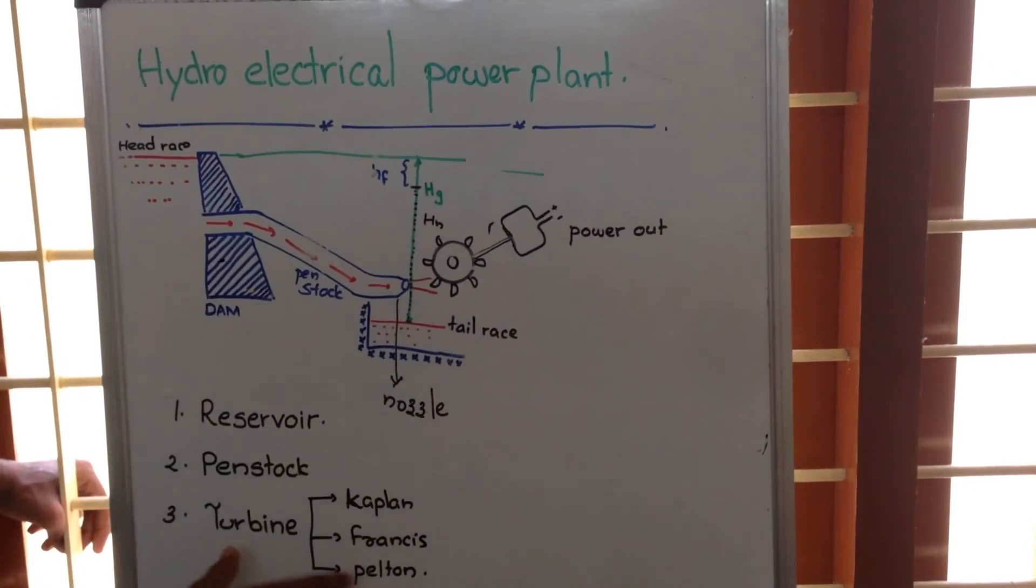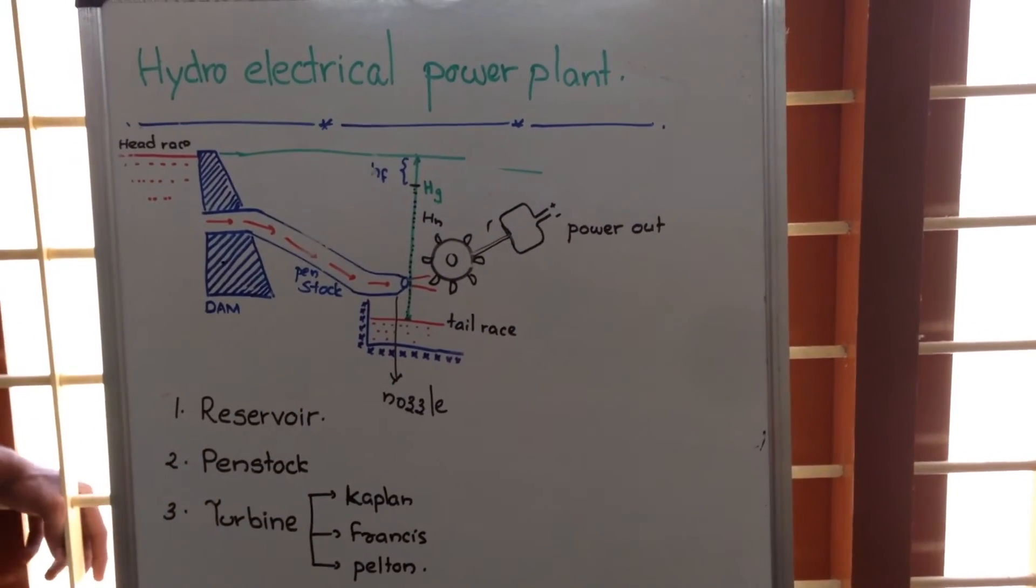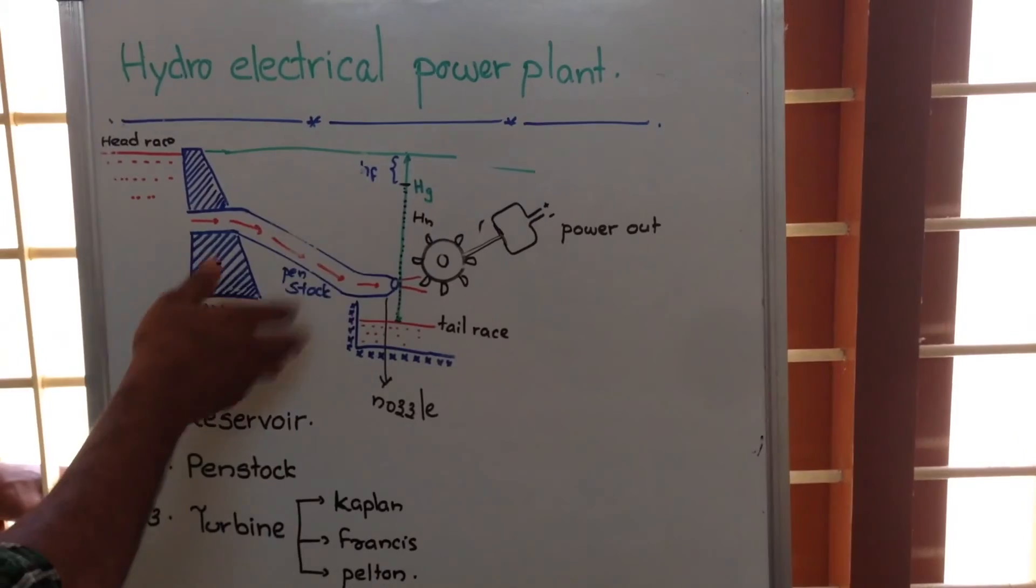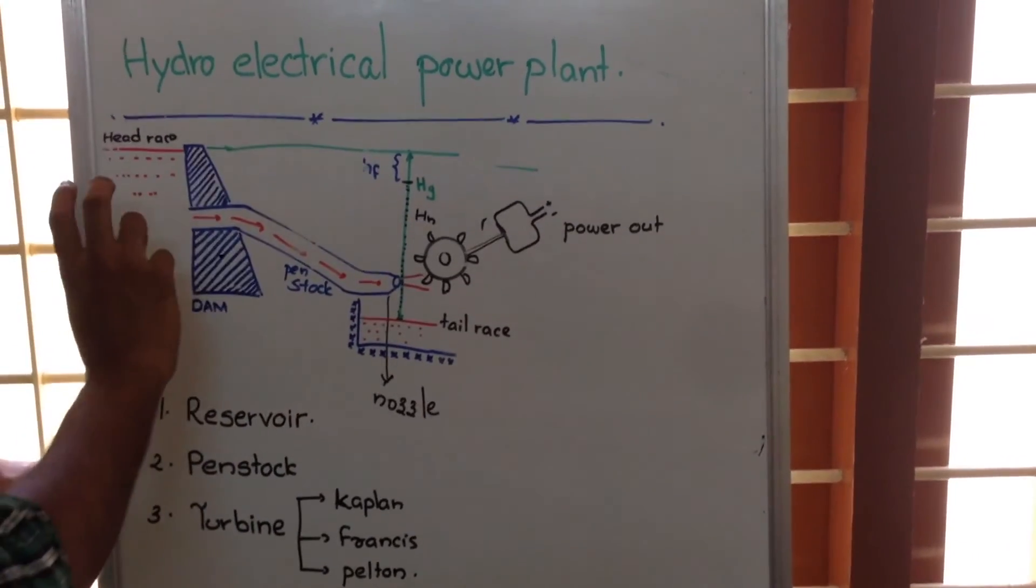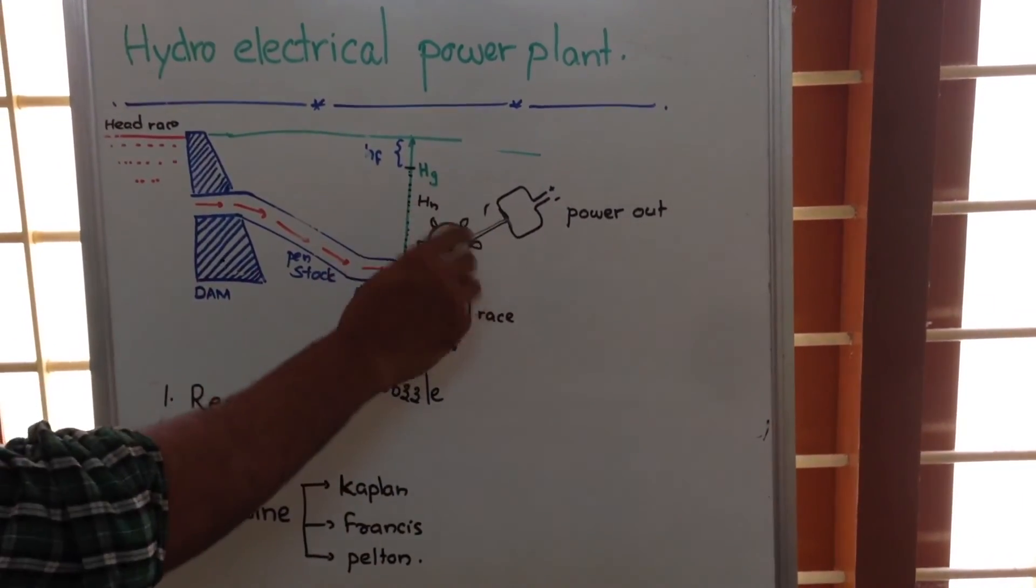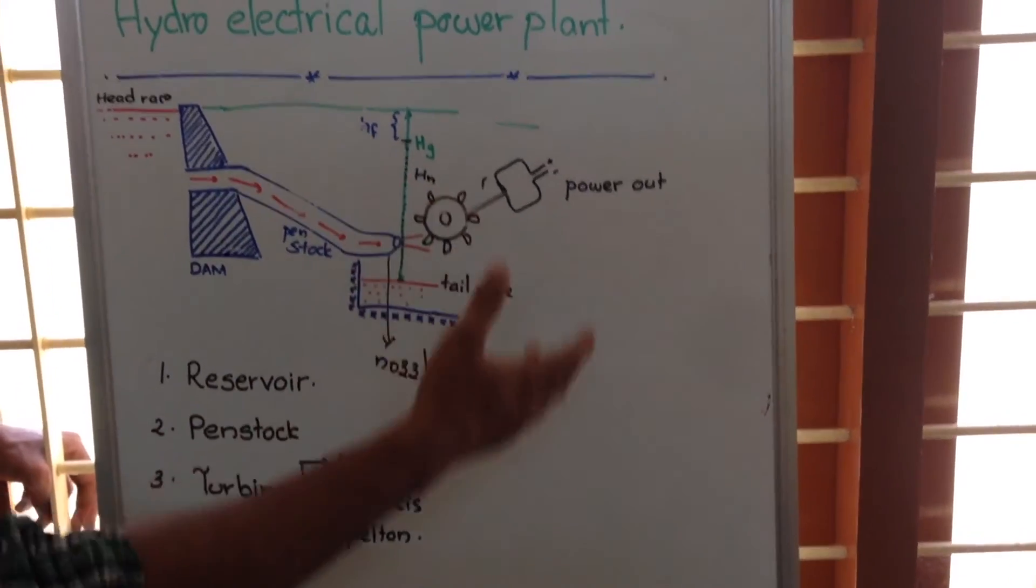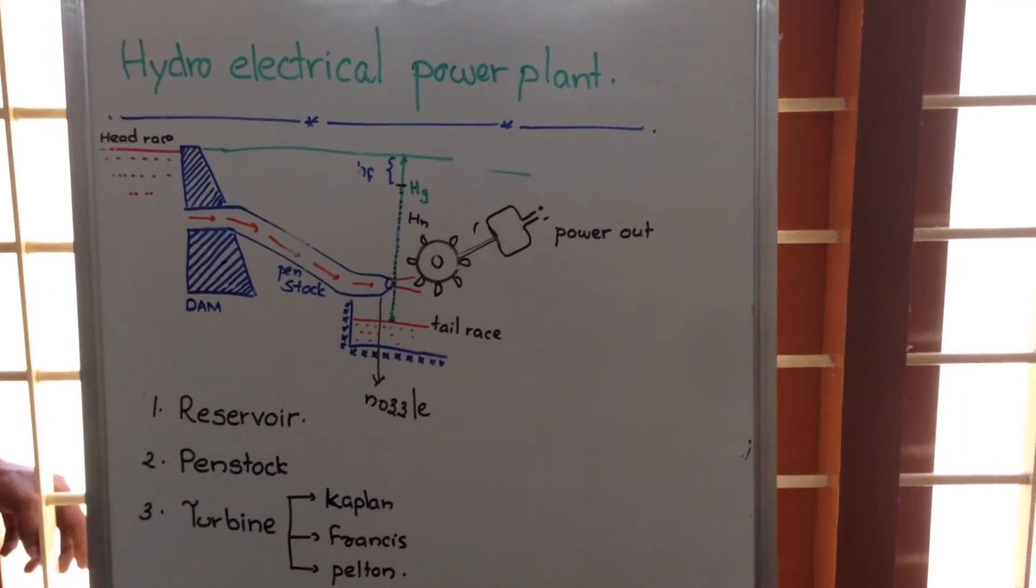In the hydroelectric power plant, the main components are reservoir, penstock, and turbine. It converts the potential energy available in the water to mechanical energy, which in turn is converted to electrical energy by the use of an electric generator. Thank you.